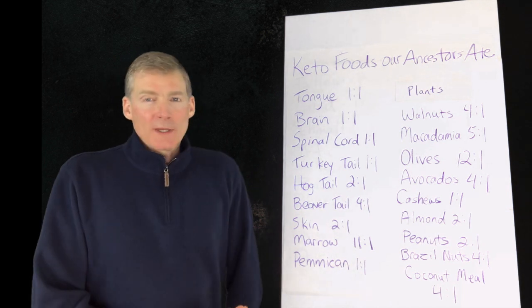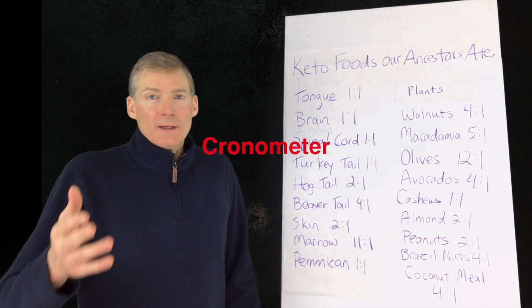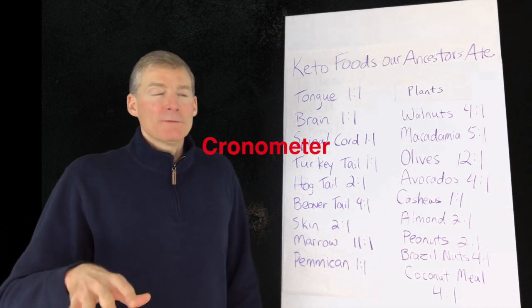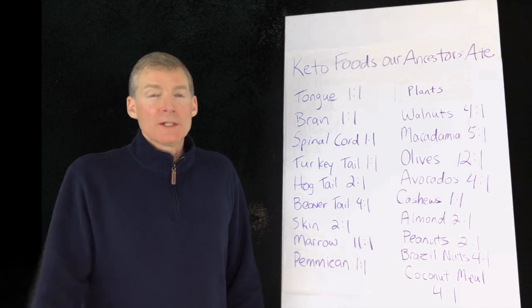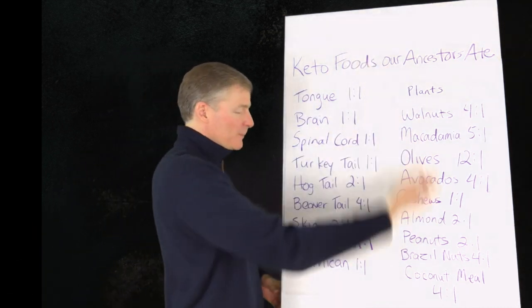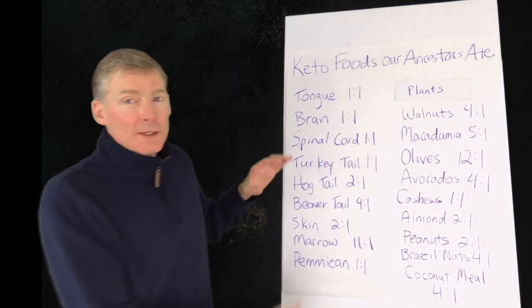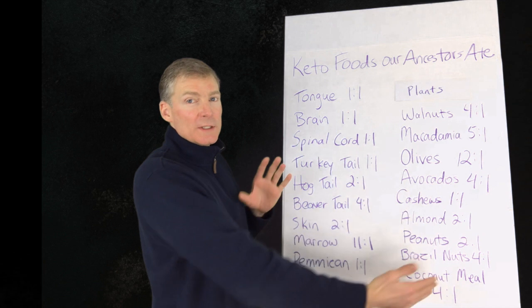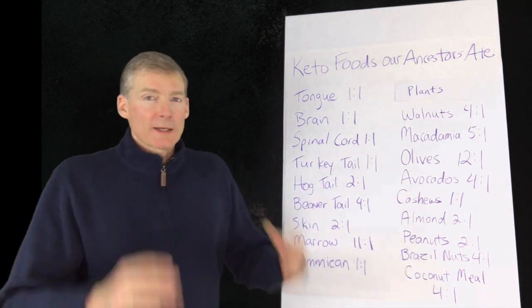There were ketogenic foods back then, and I just used Chronometer, which is an app on the phone, and I put in a bunch of foods that would have existed a hundred thousand years ago to see if I could come up with some ketogenic foods. And sure enough, here's a bunch of animal parts and plants, and I got a second sheet here that I'll go through.